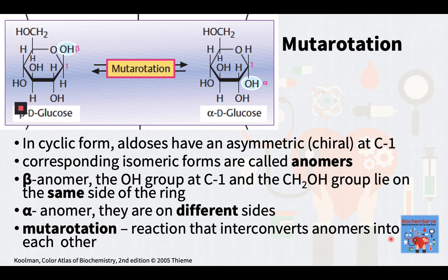The first and one of the most common reactions that sugars undergo is mutarotation. In the cyclic form, as opposed to the open chain form, aldoses have an asymmetric carbon, also called a chiral carbon, at C1.